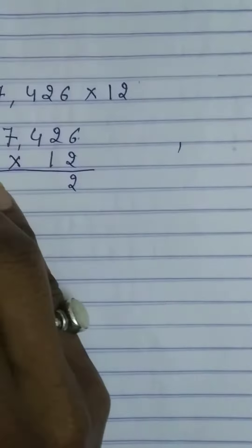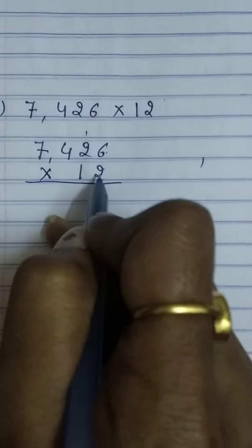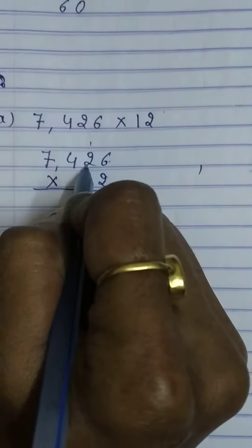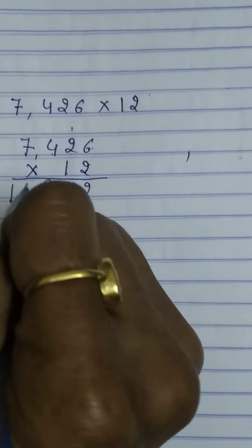2 6s are 12. You have to write 1 here, 2 here and 1. Put it here. Count table of 2. 2 2s are 4 and 1 is 5. 2 4s are 8. 2 7s are 14.